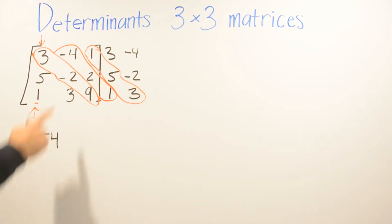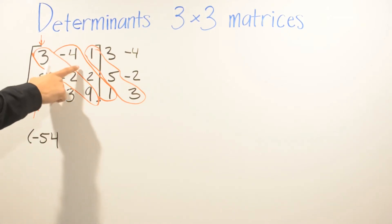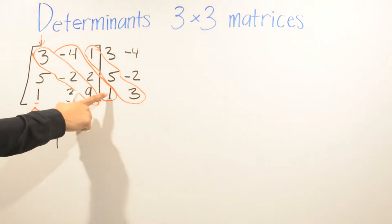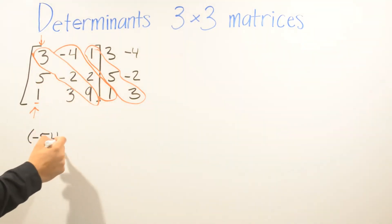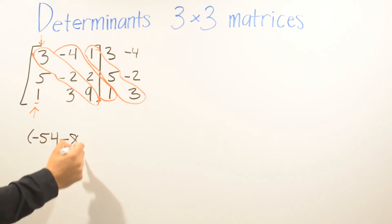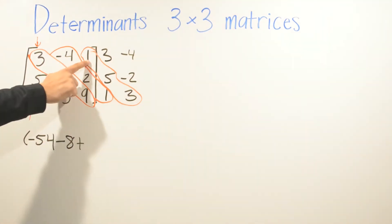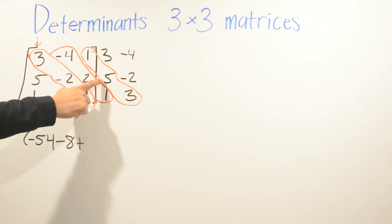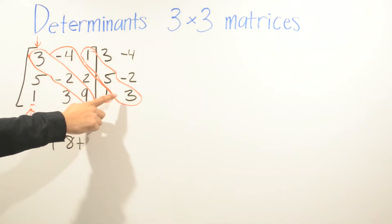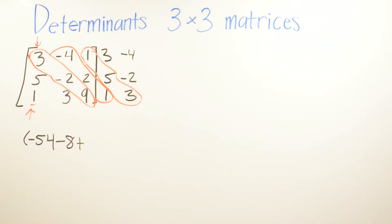Then we're going to multiply down here. Negative 4 times 2 is negative 8, times 1 is negative 8. And then the last one: 1 times 5 is 5, and 5 times 3 is 15.